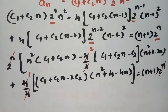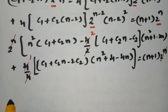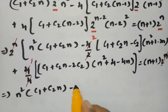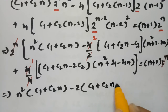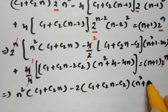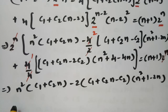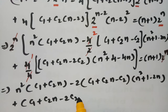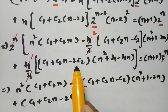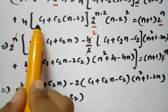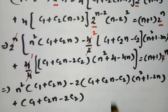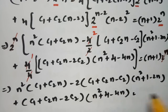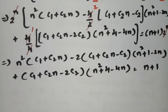After canceling 2^N on both sides, the next step expands to: N²·(C1 + C2·N) − 2·(C1 + C2·N − C2)·(N²+1−2N) + (C1 + C2·N − 2C2)·(N²+4−4N) = (N+1). We call this equation A, and now solve for C1 and C2.